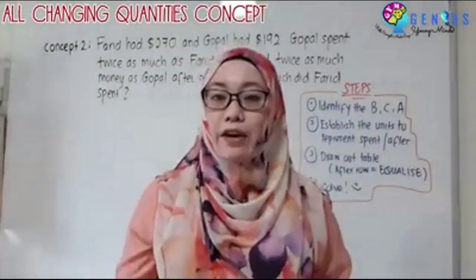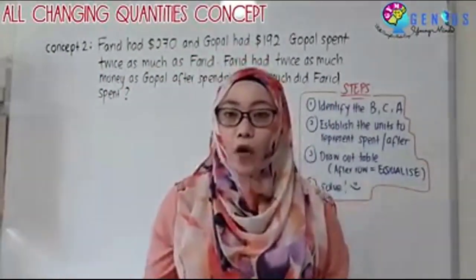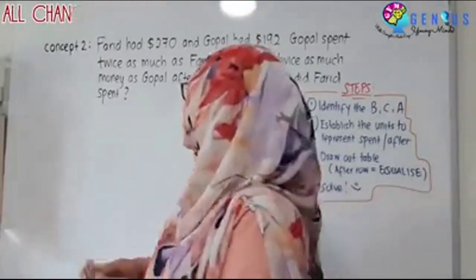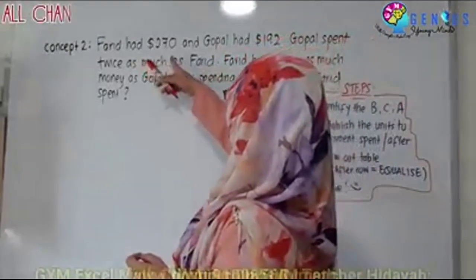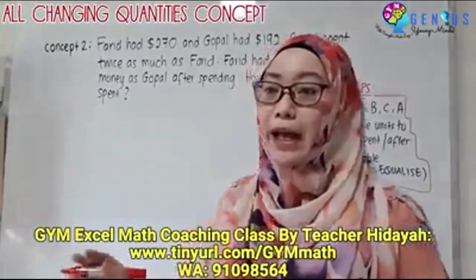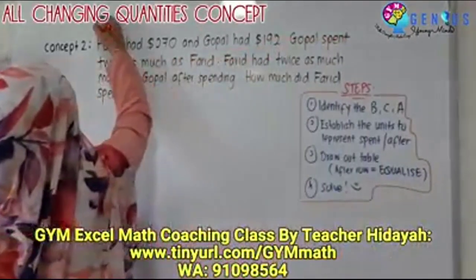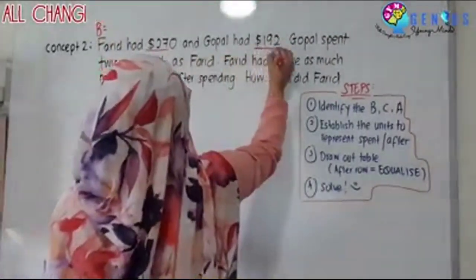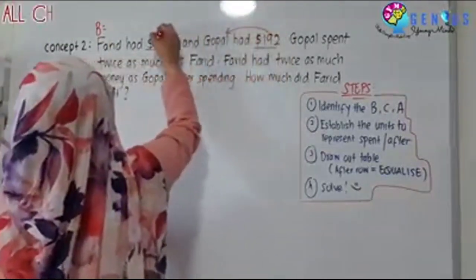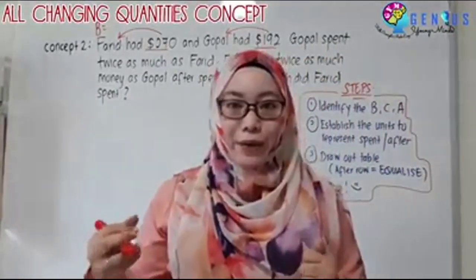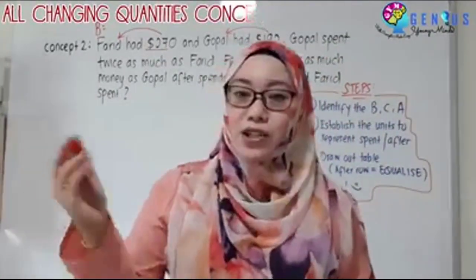In the question, you will have to identify where is the before sentence, the changed sentence, and the after sentence. Farid had $270 and Gopal had $192 — this is definitely my before. I always get my students to underline and draw an arrow back to the person so that they are aware of what they are reading and can identify straight away.